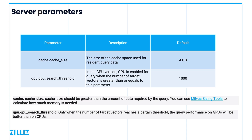You can calculate the size of the space required by using the Milvus sizing tool. The parameter gpu.gpuSearchThreshold determines whether GPU queries are enabled. In the GPU version, GPU is enabled for the query when the number of target vectors is greater than or equal to this value, with a default value of 1000. The performance of GPU queries depends on the GPU and the speed at which the CPU loads data into GPU memory. The advantages of parallel computing with GPUs cannot be fully utilized when processing a small number of target vectors. Only when the number of target vectors reaches a certain threshold will GPU query performance be better than on CPUs. In practice, the ideal value of this parameter can be obtained through testing.